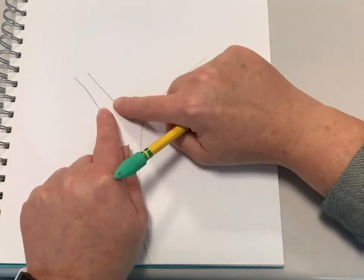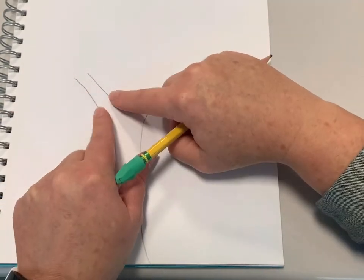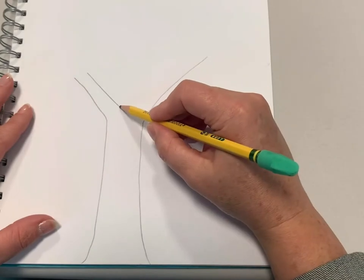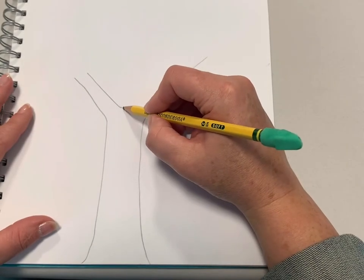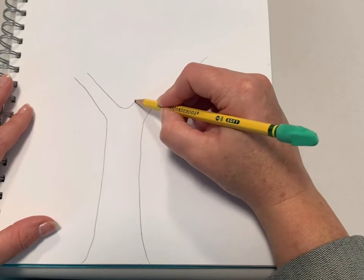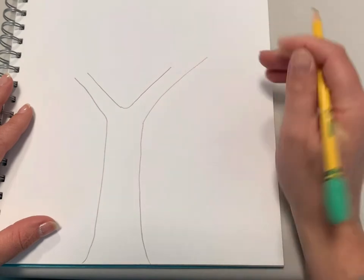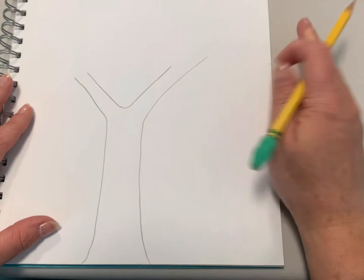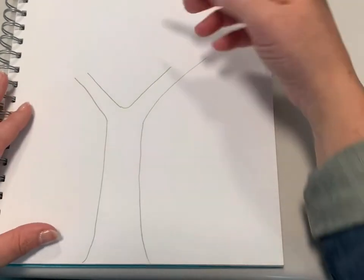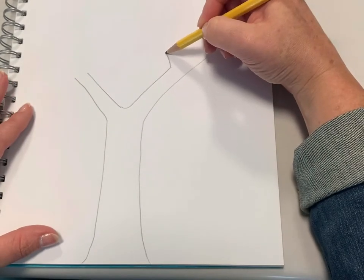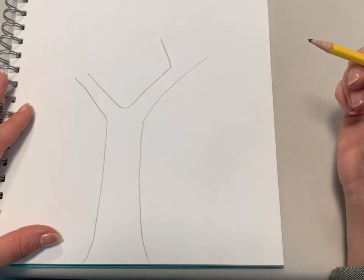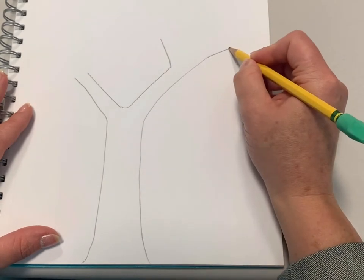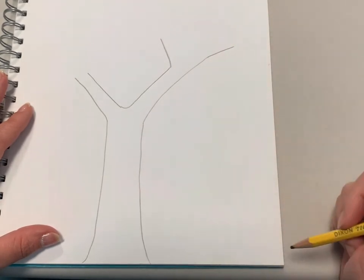So you are going to do another copycat line on the other side so that all of our branches are double lines. And we're going to make this branch wider at the top so the two lines are going to go out. It seems really strange at first when you do this.